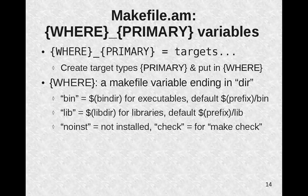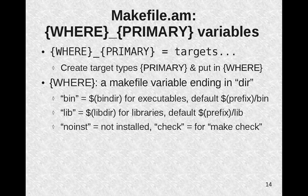The makefile.am file can define a number of variables of the form where_PRIMARY equals targets. This simply creates targets of type primary and puts them in 'where' when they're installed. 'Where' can be a makefile variable ending in 'dir'. So 'bin' simply means the bin dir — that's where you put executables. By default, this is prefix/bin.